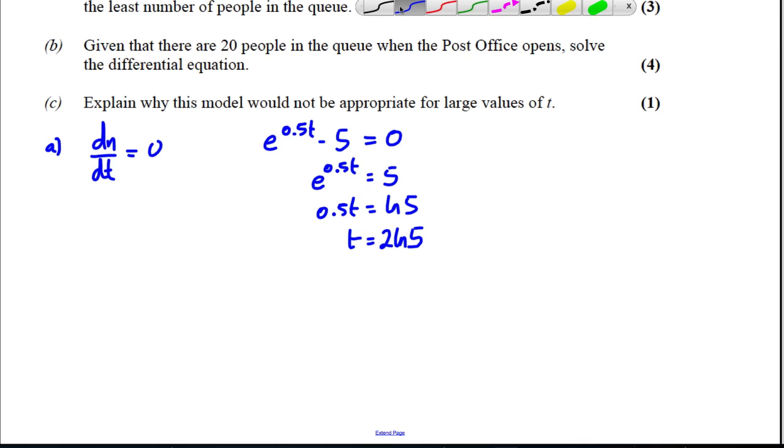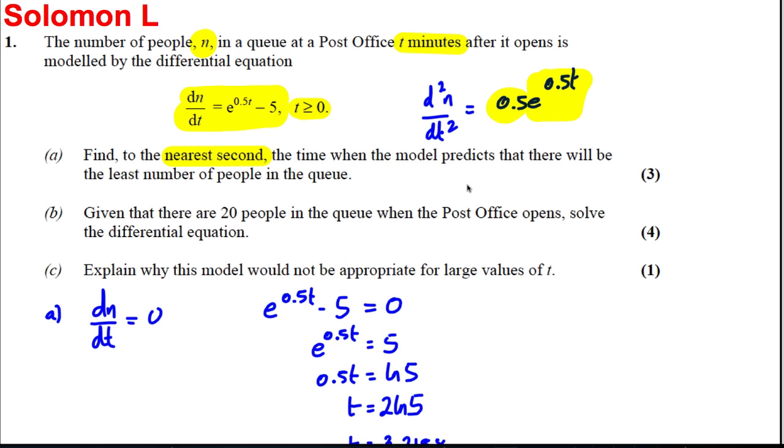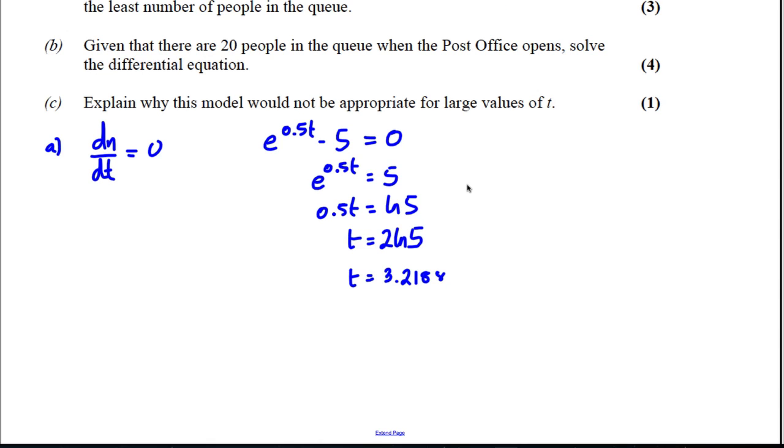So t is 2 ln 5. I tap that in my calculator, 2 ln 5, and I get myself time equals 3.2188. This is obviously, it tells us t is in terms of minutes. It asks us to the nearest second, therefore we've got three minutes here. So the time is clearly three minutes and it's this much of a minute, so I multiply 0.2188 by 60 to see how many seconds it is. So it's three minutes and 13 seconds to the nearest second, and we're done.